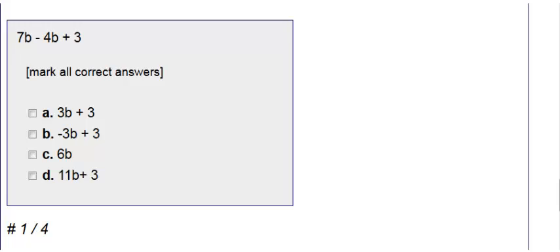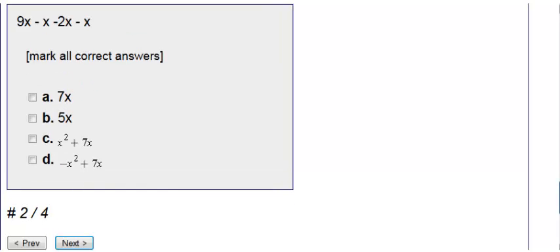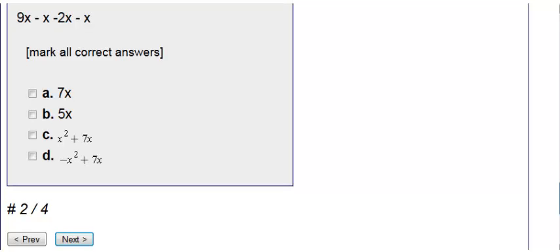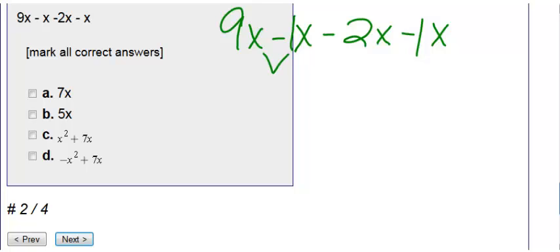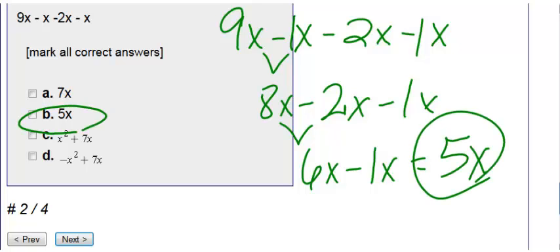Number two, we have 9X minus X minus 2X minus X. So let's write this out: 9X minus X minus 2X minus X. Now if there's no number in front of these X's, we know there's a 1. So these all have X's, so I can combine all of them. 9X minus 1X is 8X, bringing everything else down. 8X minus 2X is 6X. And lastly, 6X minus 1X is 5X. So we get choice B.